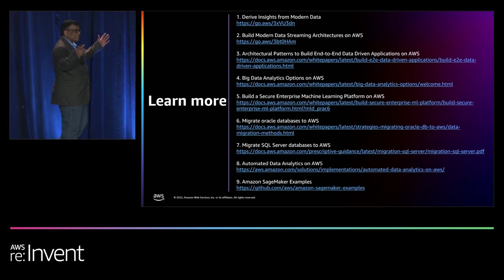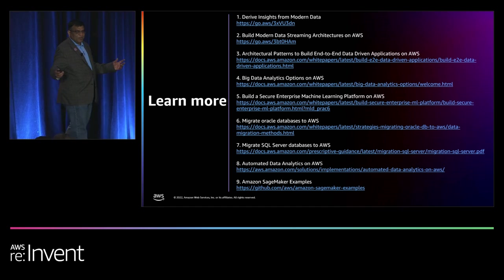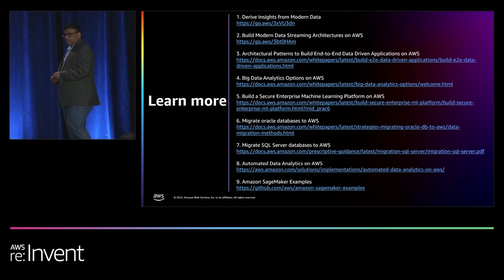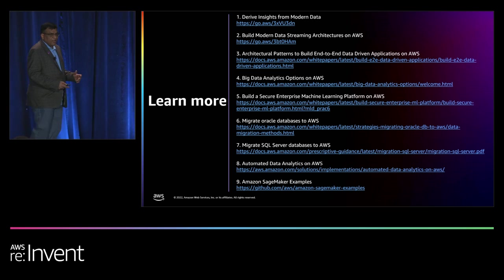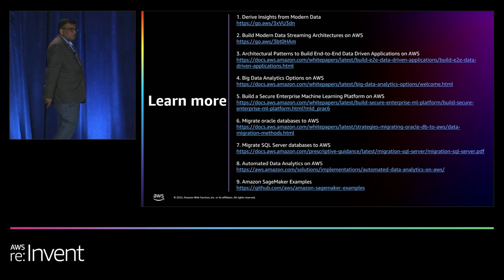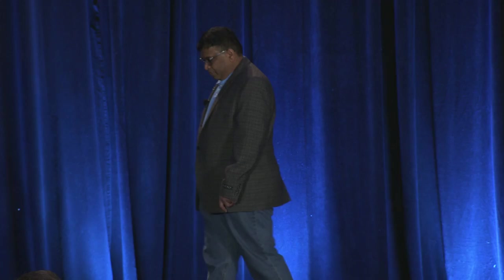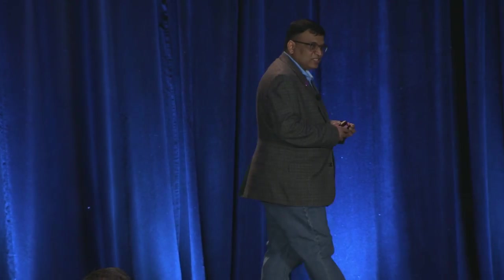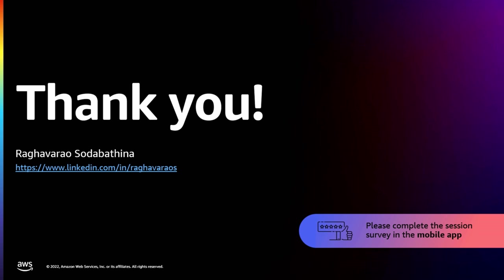Now we learned about modern data strategy and modern data architecture. If you want to get hands-on, we have an automated modern data architecture solution available as part of AWS Solutions — just bring your data and derive insights from your data. Also, if you want to build machine learning workloads, we have Amazon SageMaker examples in GitHub — you just bring your data, play around with it, and see if those models can solve your business problems. Thank you so much for your time. I hope you learned something from this session. We started with learning what is modern data architecture and how to build modern data architectures on AWS. I would highly recommend looking at those white papers. Please look at the last two sections to bring data and derive insights, and if you want to build machine learning workloads using Amazon SageMaker, refer to the last one. I'm happy to take follow-up questions.